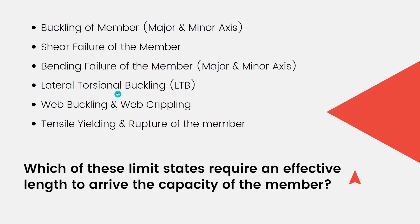Web buckling and web crippling are local failures and do not involve any length parameter. Tensile yielding and rupture depend on the cross section and length has nothing to do with that. So as discussed, buckling of the member and LTB are the two limit states which use the effective length.